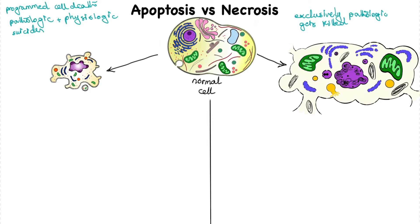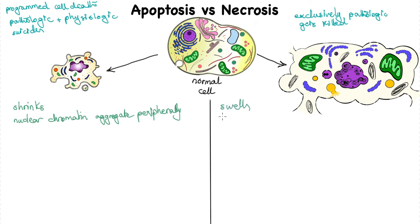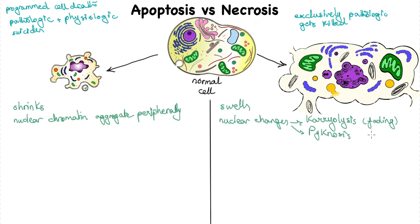Morphologically, in case of apoptosis, the cell shrinks in size and has its nuclear chromatin aggregate peripherally in the nucleus, as opposed to necrosis in which the cell swells. Nuclear changes in necrosis can have three different patterns, including karyolysis or nuclear fading, pyknosis or nuclear shrinkage, and karyorrhexis or nuclear fragmentation.